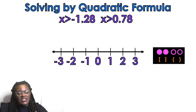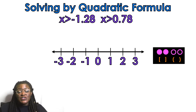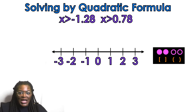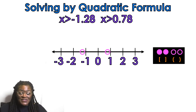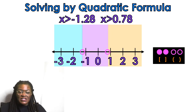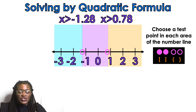On the number line, you want your values from least to greatest. First, decide: open circles or closed circles — equivalently, parentheses versus brackets — depending on how your teacher is presenting it. We're using closed circles approximately at negative 1.28 and positive 0.78. There's a blue area to the left, a purple area in between, and an orange area to the right.